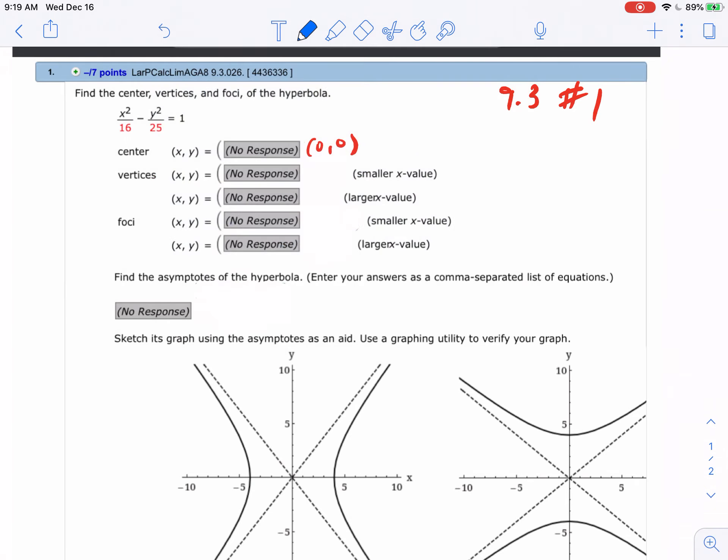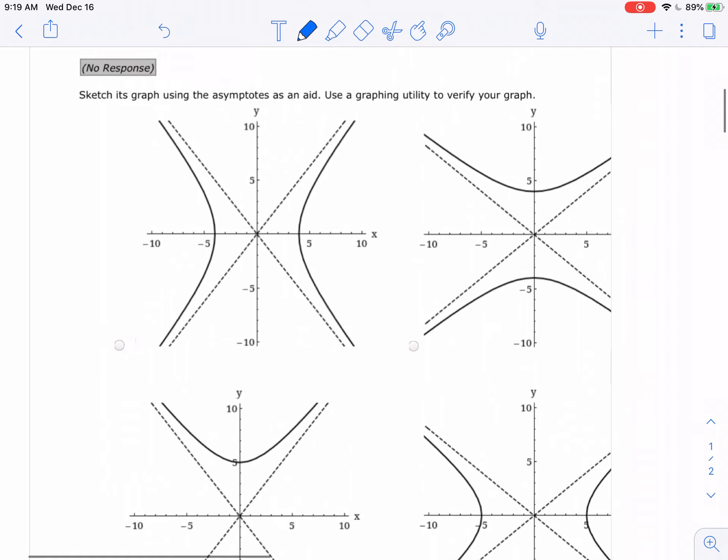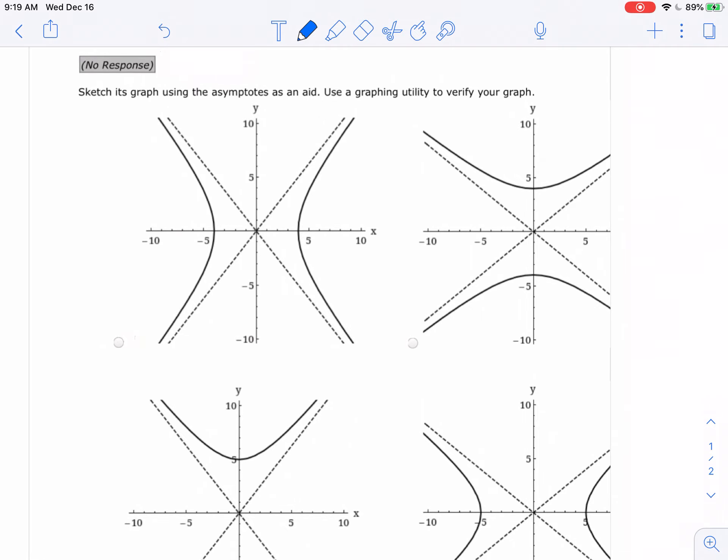So I'm going to take that 16, square root it, and I get 4. So I'm going to go right and left 4 from the center. To get the smaller value I should go left first, and so that's going to be (-4, 0). Then if I go to the right 4 from the center I would be at (4, 0). So if you wanted to, now you could go and look at which graph has vertices at (4, 0) and (-4, 0).